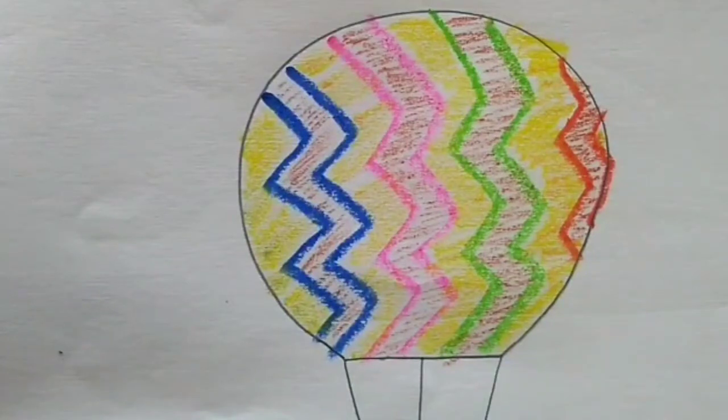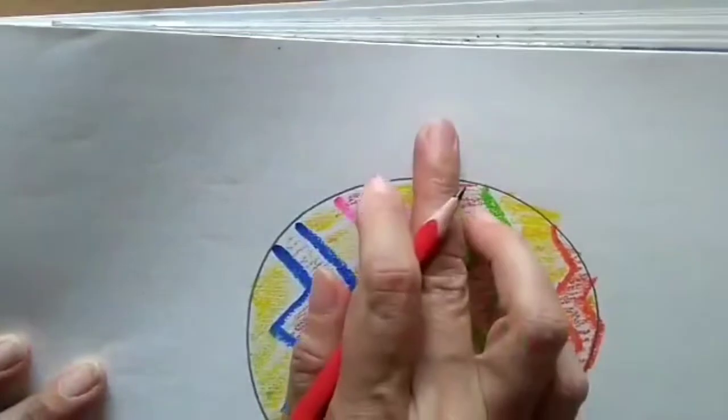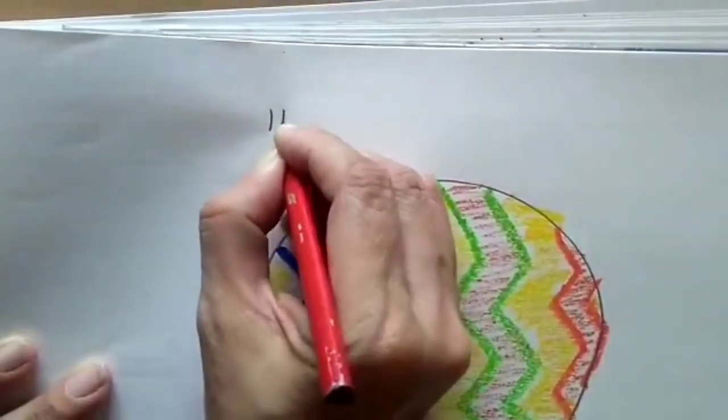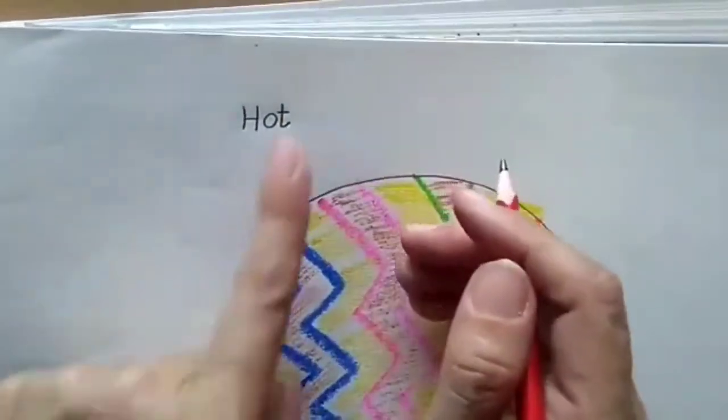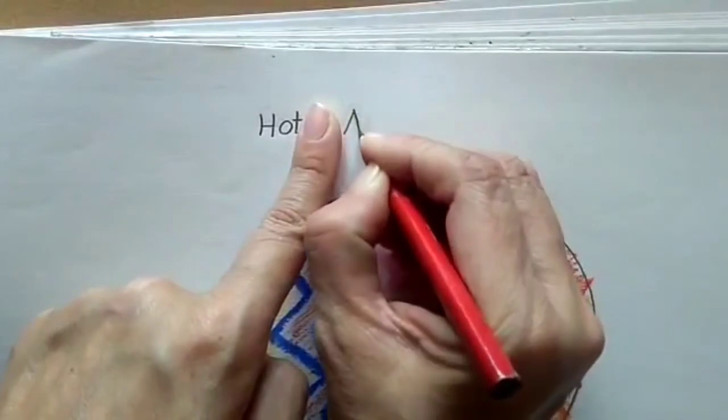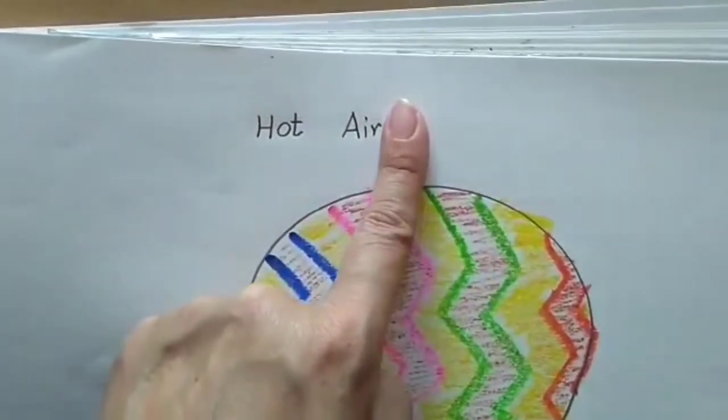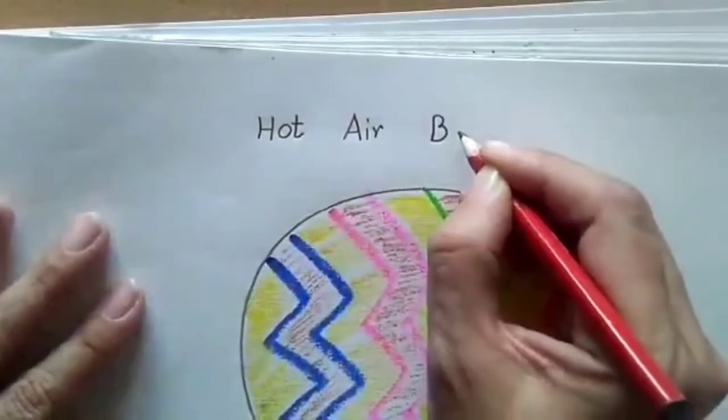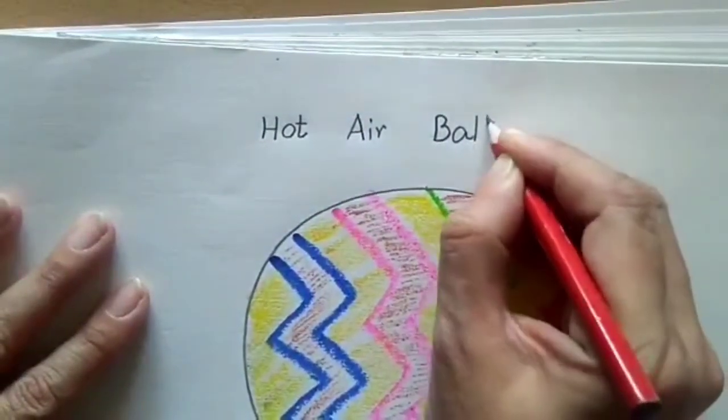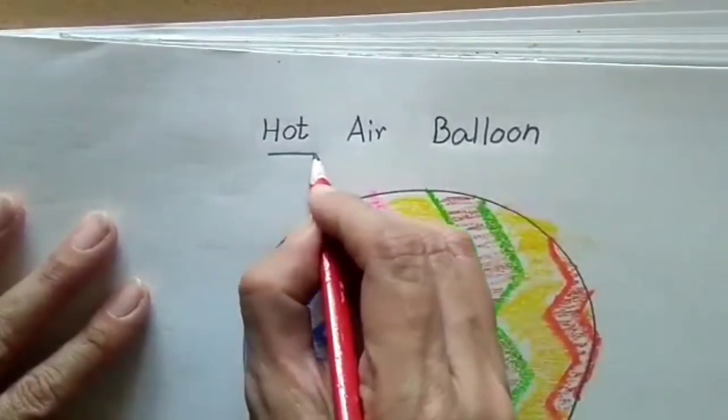And now I need to write the name hot air balloon. Now we will write above this hot air balloon. It will be H capital, O and T hot. Then put your index finger. Write the word air: A capital I R air. Then again place your index finger and write balloon: B capital A double L double O N balloon. And then put a sleeping line.